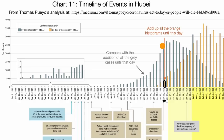You might be asking: how did they know the actual number of cases if they didn't test everyone? When someone tested positive, officials asked them when they first got symptoms. If they said they first got symptoms 10 days ago, they would be included as an actual new case 10 days before that — on January 13th. So the Chinese officials were able to construct these gray bars in hindsight based on when people said they first got symptoms.